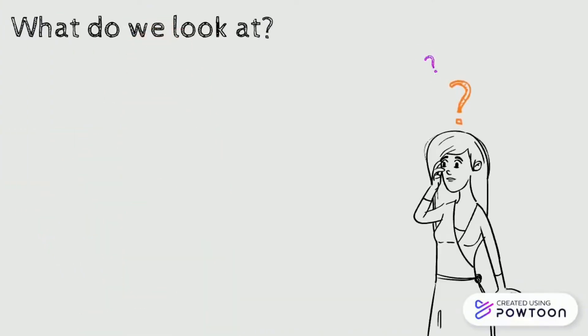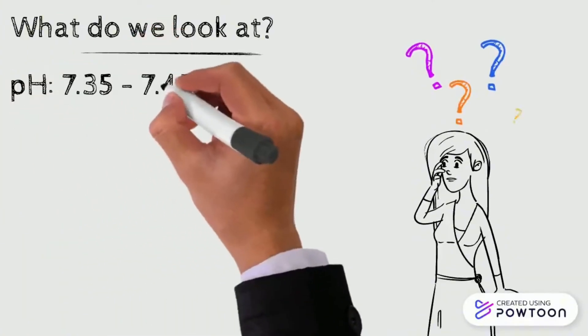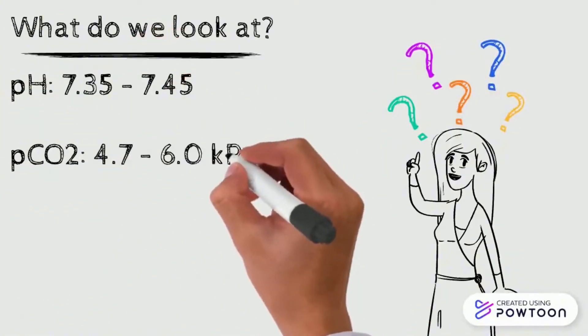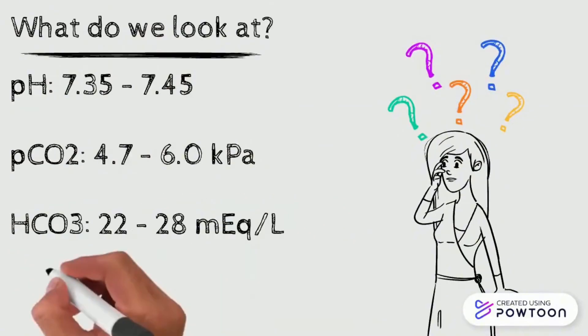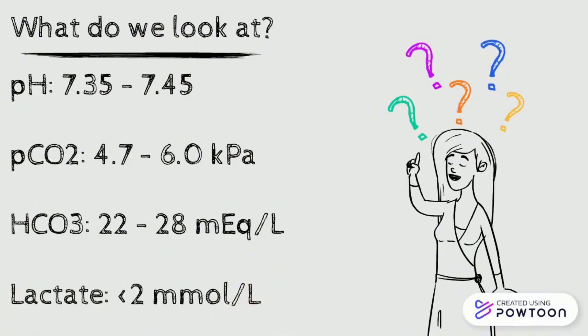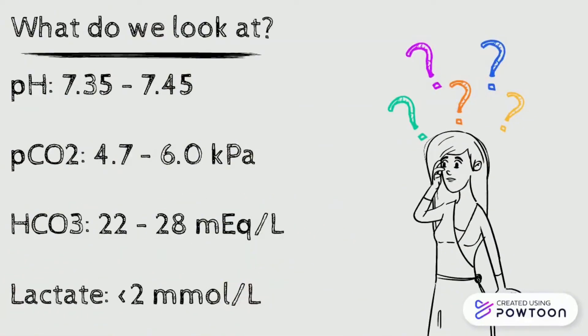What do we look at? First, we look at the pH, and then we look at three parameters that affect the pH: the CO2, the bicarbonate, and the lactate.